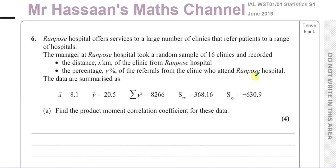We don't really need to know too much detail about what these mean — in fact, many students answer these questions just by looking at the formula sheet. So now it says part A: find the product moment correlation coefficient for these data. That is a measure of how closely correlated these two things are — it tells us whether they're positively or negatively correlated, and the strength of their correlation. That's what the value of R tells us.